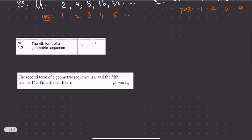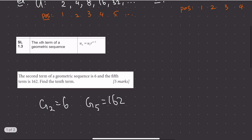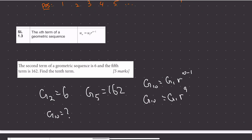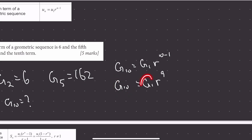Let's try a concrete example. The second term of a geometric sequence is 6, and the fifth term is 162. So calling the sequence g: g2 equals 6 and g5 equals 162. We want to find g10, which equals g1 times r to the power of 9. We need to figure out both g1 and r.